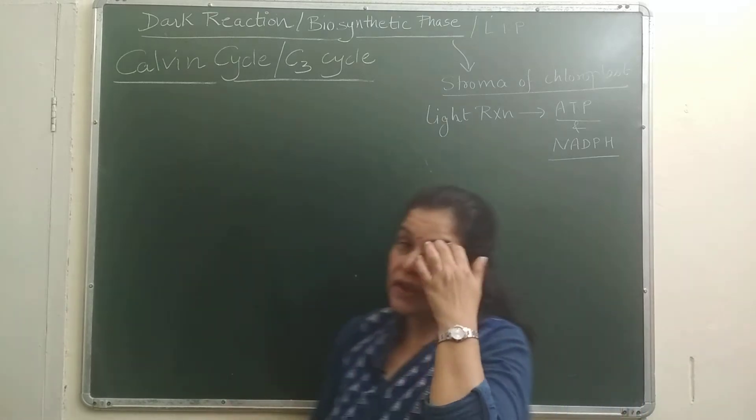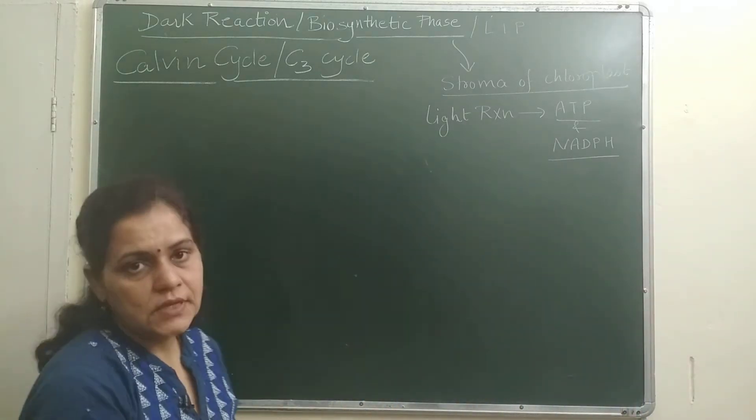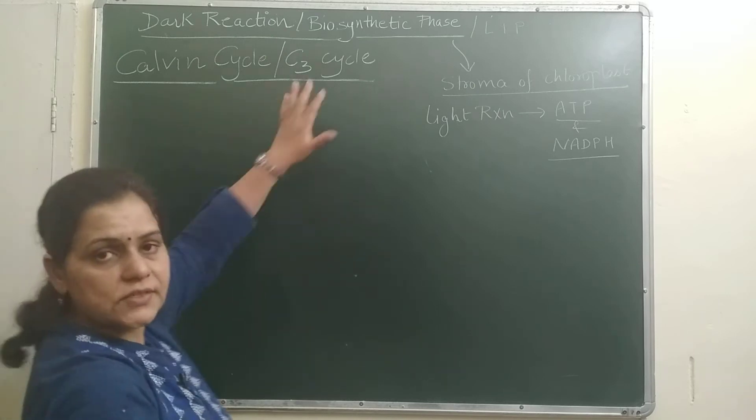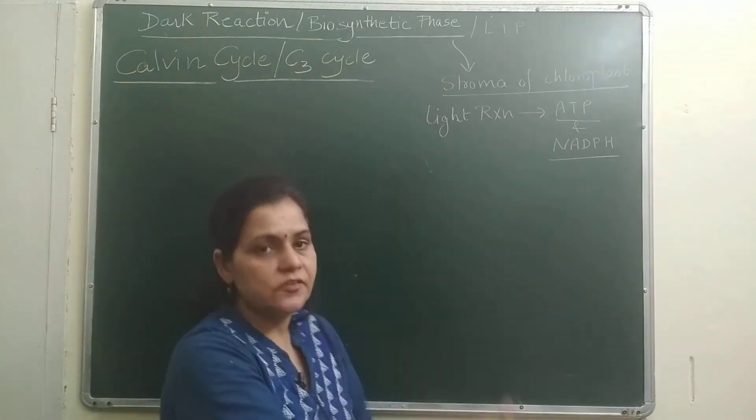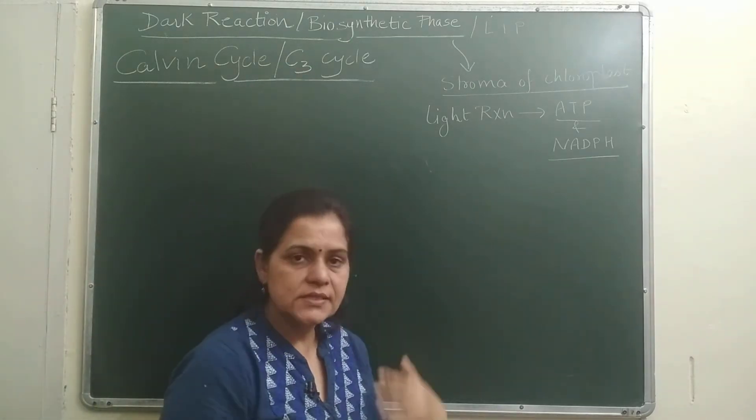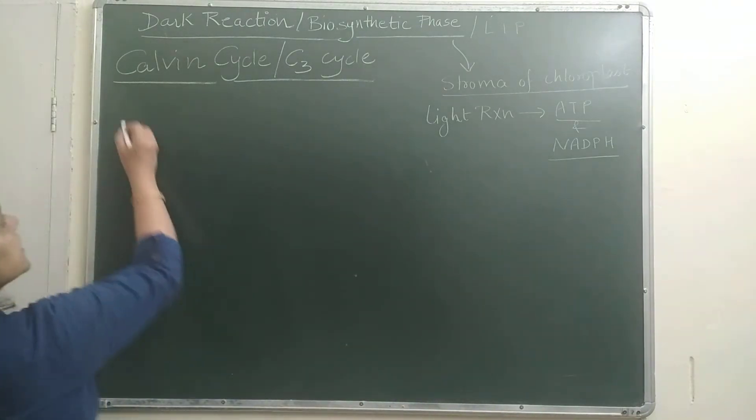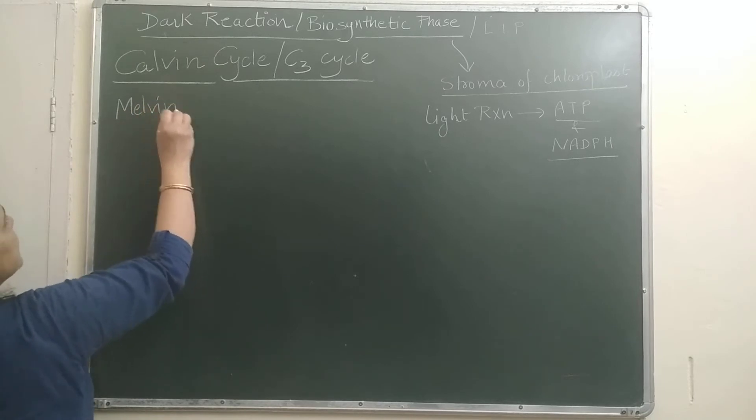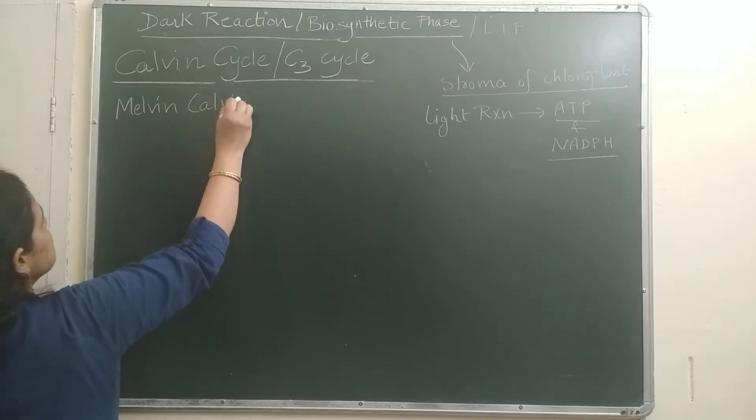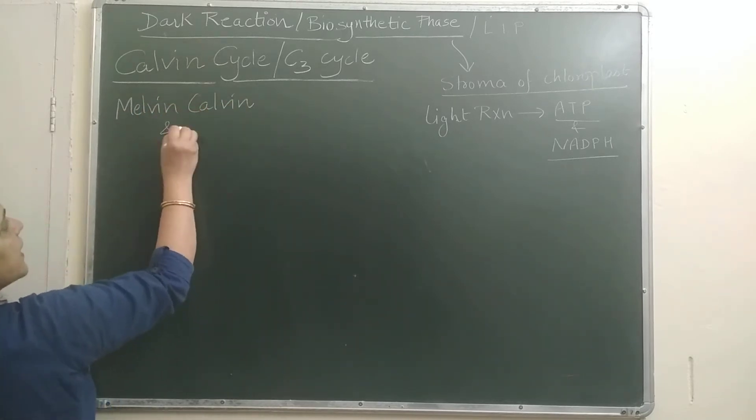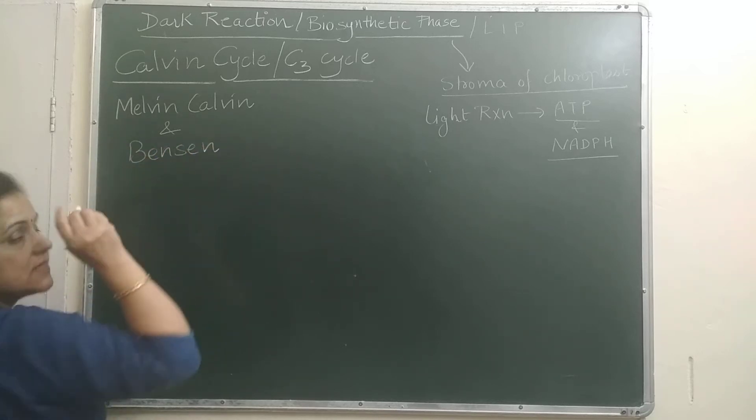Now we are talking about Calvin cycle. In some plants it will only be C3 cycle, but in some plants it will be C4 also. That we will be discussing later on. So here the Calvin cycle, why do you call it Calvin cycle? Because it was discovered by Melvin Calvin and his colleagues were also there. There is one name of his colleagues, Benson. So his name is Calvin and Benson cycle.